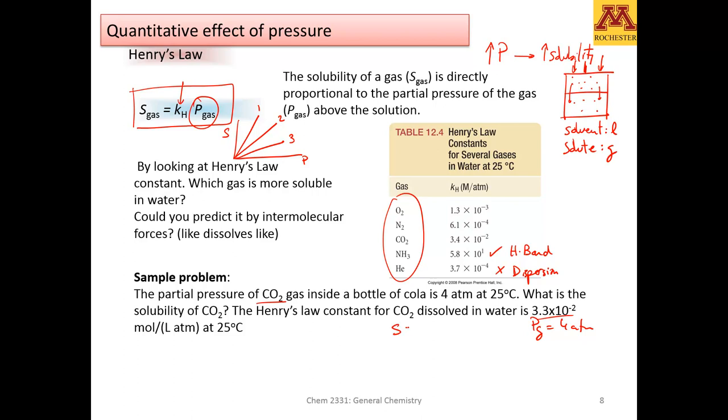Okay, so you just need to multiply. It's fairly easy, but I thought it was at least worth just to try. Mol over liter and atmosphere, multiply by 4 atmospheres, atmosphere and atmosphere goes. So this means that what you're going to see, the solubility, let me see, 4, this is going to be 3.2, hopefully, 3.2 times 10 to the minus 2 moles over liter.